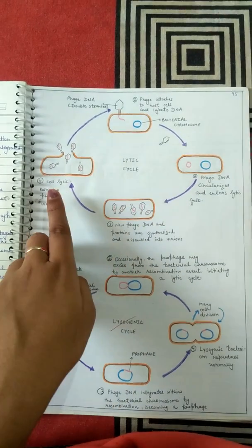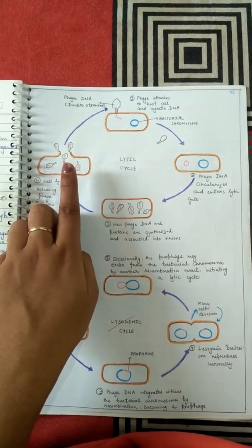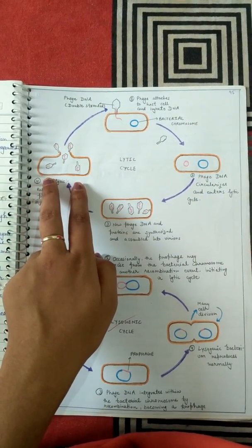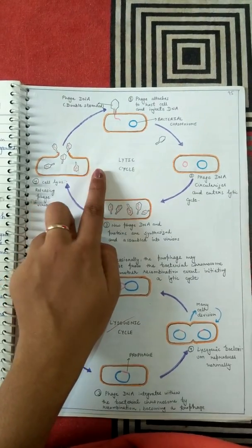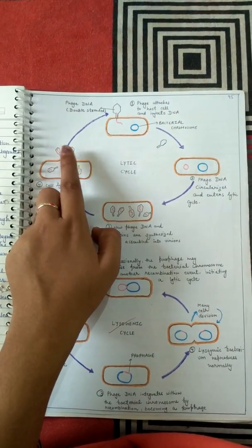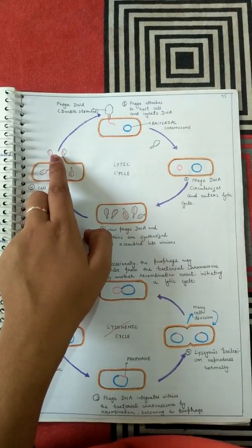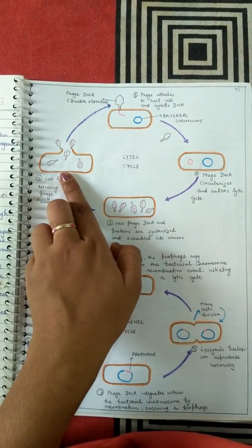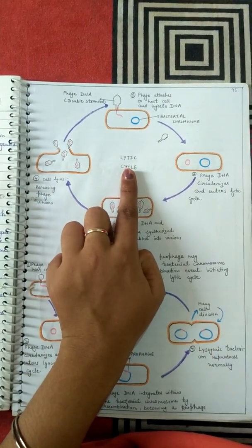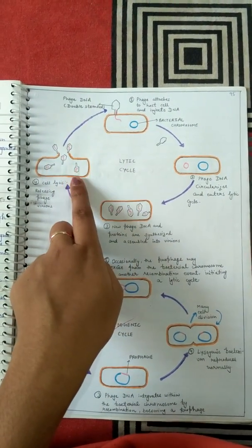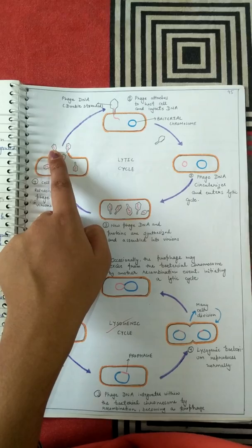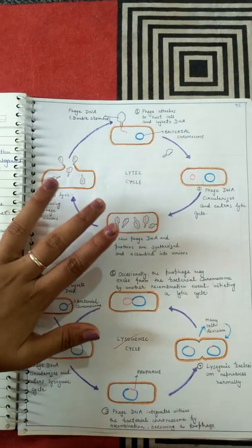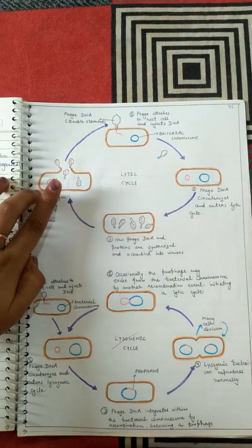In the next step, cell lysis occurs — that's why it is called the lytic cycle. The bacteriophage lyses the bacterial cell and the virion particles are released. These virion particles are infectious, have their own DNA, and are encapsulated inside a protein coat. The newly formed infectious particles are known as virions or bacteriophages.